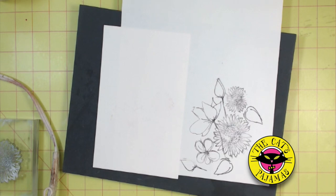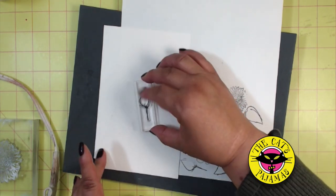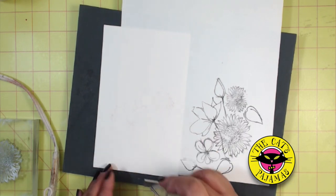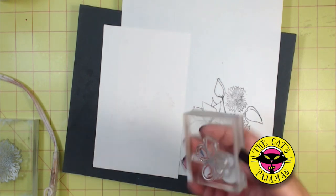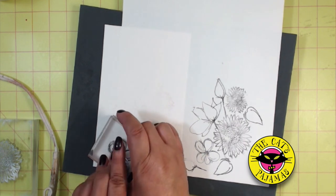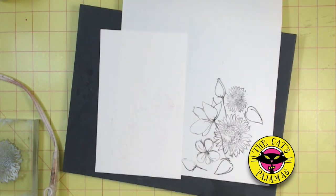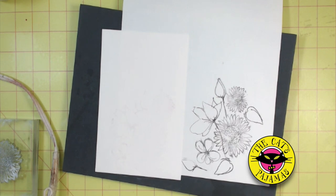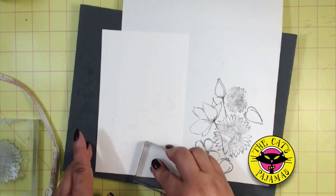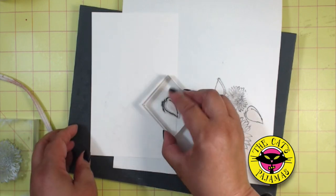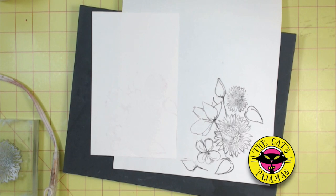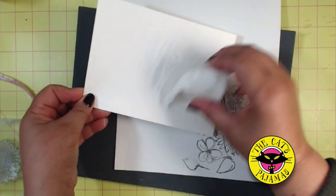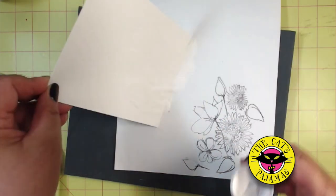A couple of the buds. I guess I should stamp the daisy looking flower first. Then the bud, and then finally the leaf. And then I'll just add this white embossing powder and heat emboss.